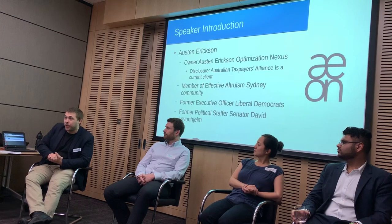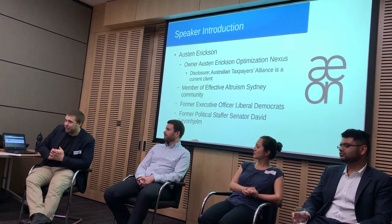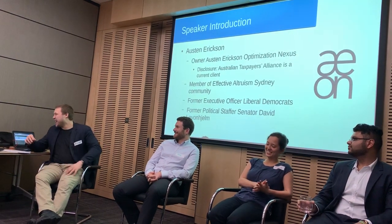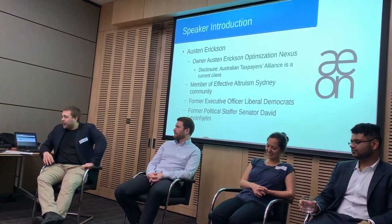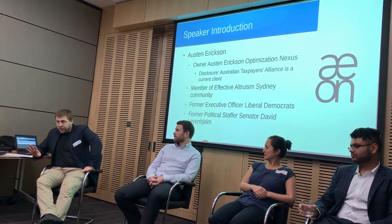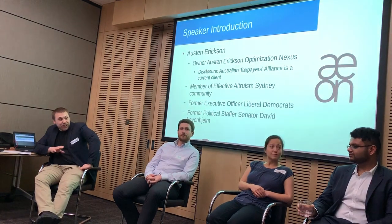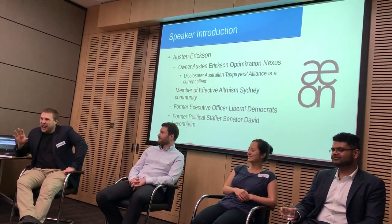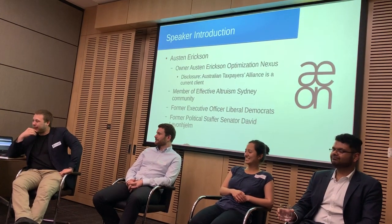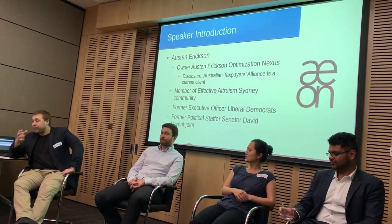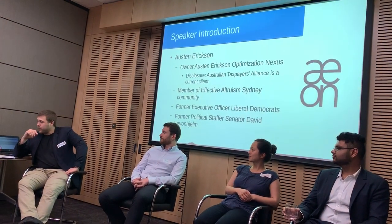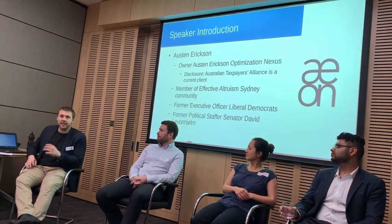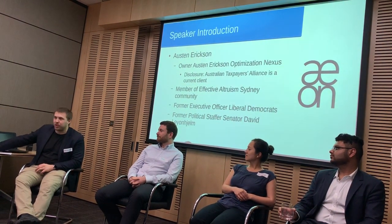Now we're onto the speaker introduction. I'll introduce myself — you may give me applause if you like at this time. It's never quite so inspiring when you have to ask for it. I'm the owner of a consulting firm, the Austin Erickson Optimization Nexus, or AON for short. I should give full disclosure: one of the other members of this panel represents a client of mine, the Australian Taxpayers Alliance, but I will remain impartial — they're not my only client. I promise I will give them as hard a time as I give the other speakers. I'm also a member of the Effective Altruism Sydney community, a former executive officer of the Liberal Democratic Party, and a former political staffer for Senator David Leyonhjelm. My current work is as a consultant, but I've previously worked for political parties and as a staffer for a politician. I'm also a mathematician at heart.